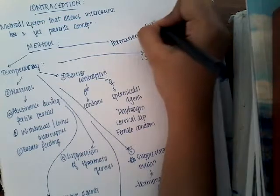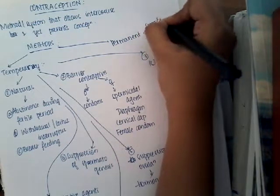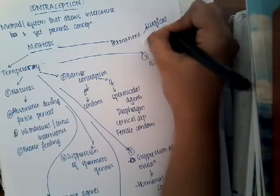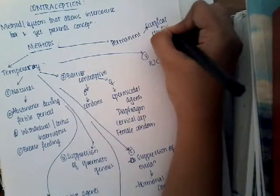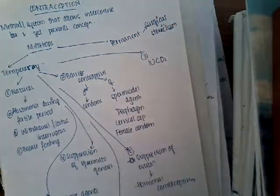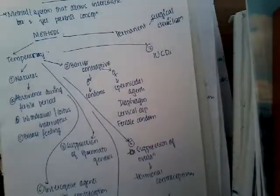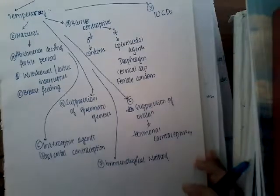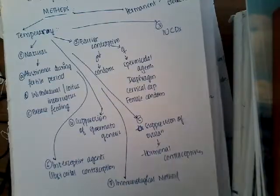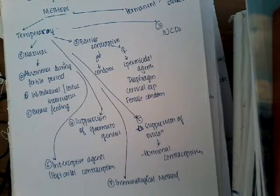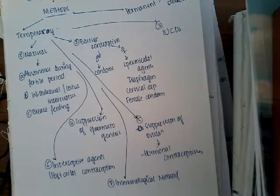The permanent type of contraception is surgical sterilization — vasectomy in males and tubectomy in females. These are the different contraceptive methods available. In our next class we will learn about the natural methods of contraception. Thank you for watching my lecture.